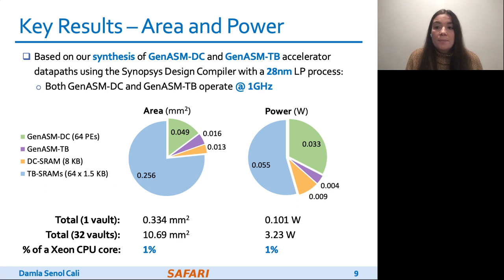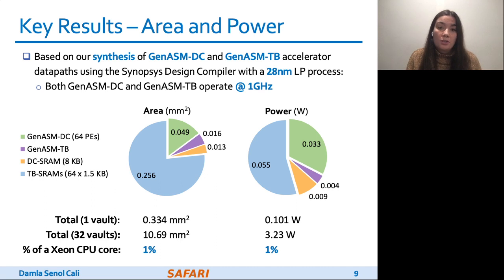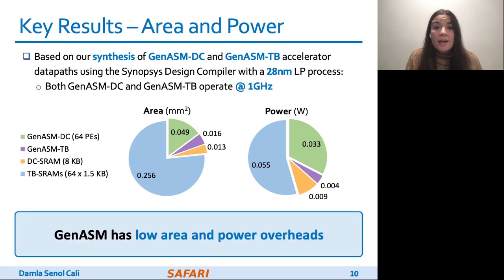We synthesize our DC and TB accelerator datapaths with a typical 28 nm low-power process, and when both accelerators operate at 1 GHz, we find that for 32 GENASM accelerators, one for each HMC vault, total area overhead is 10.69 mm² and total power consumption is 3.23 watts. We observed that both area and power consumption of GENASM at a single vault is around 1% of the area and power consumption of a single Xeon CPU core. So, GENASM has low area and power overheads.